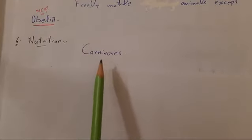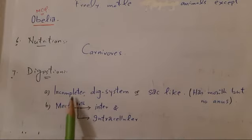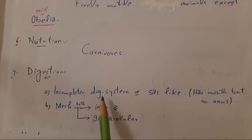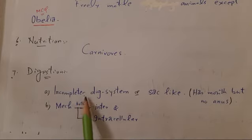Number six, nutrition: coelenterates feed on small organisms, so they are carnivorous. The prey is immobilized or paralyzed by nematocysts or stinging cells and then taken into the digestive cavity or intestine for digestion. Digestion: coelenterates have an incomplete or sac-like digestive system, meaning they have a mouth but no anus — there is only one opening, the mouth, which acts as both mouth and anus.